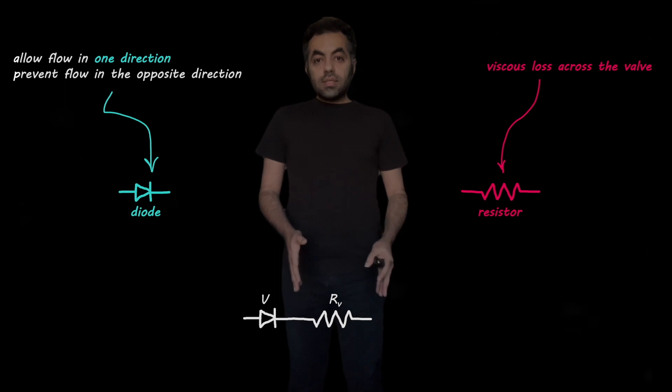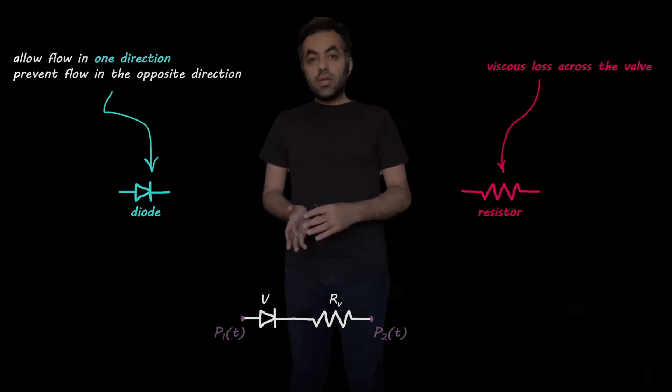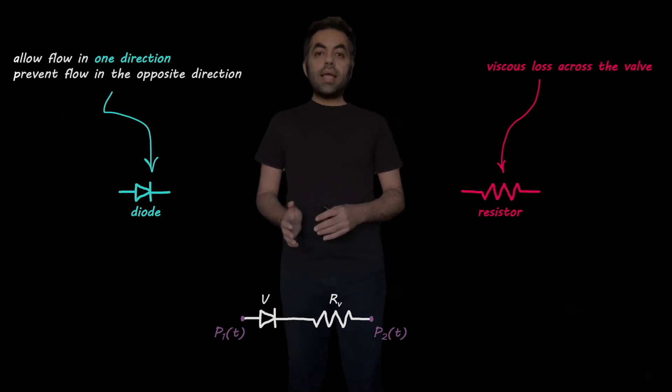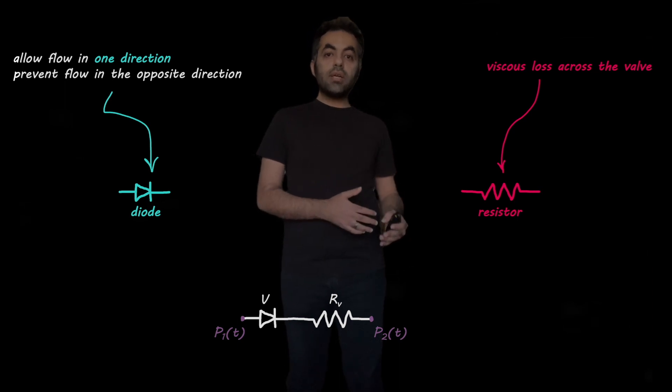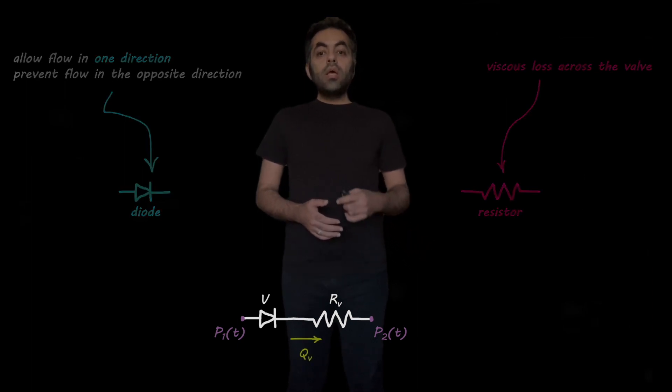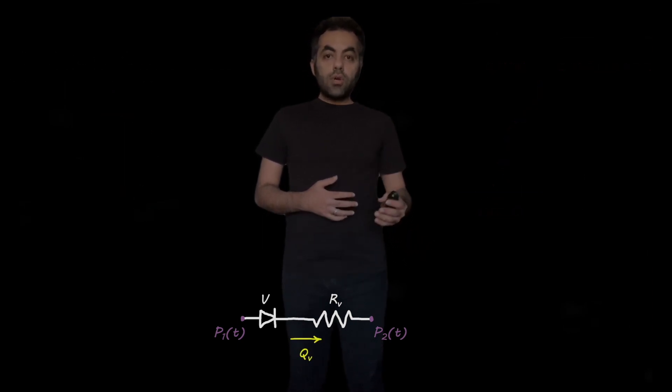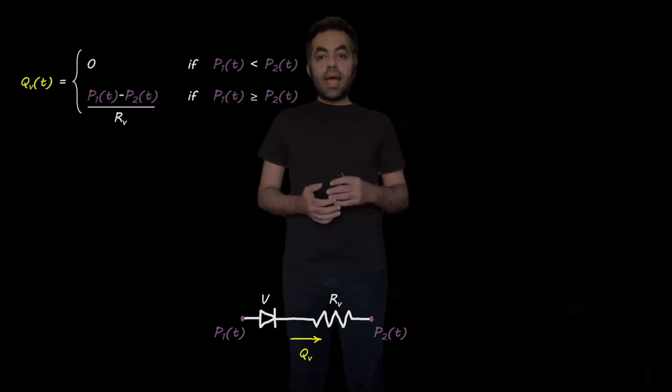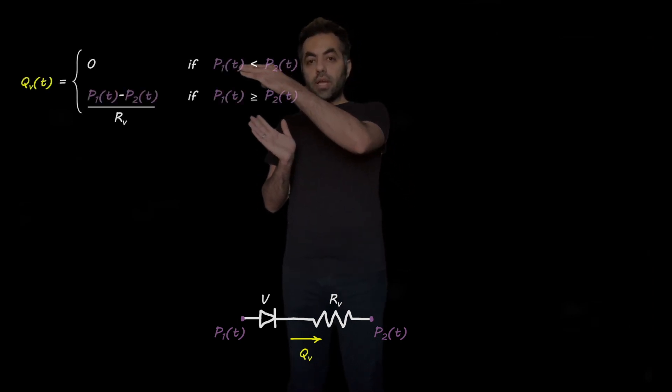In this circuit here, there is a pressure upstream of the valve, right before the valve, which is P1, and the blood pressure downstream of the valve, or right after the valve, P2. So Q or flow rate across the valve can be written as these equations, the combination of these two equations here.